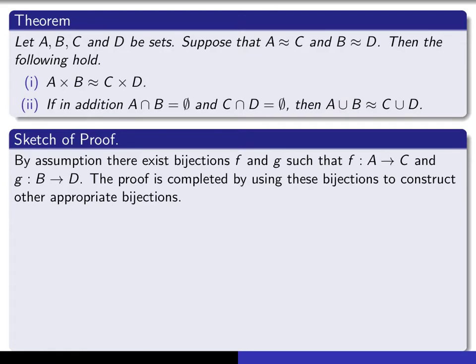So let me start the proof for you. By assumption, there exists a bijection F from A to C. And this assumption here says that there exists a bijection G from B to D. So the idea of the proof is we have to use F and G to create bijections here and here.